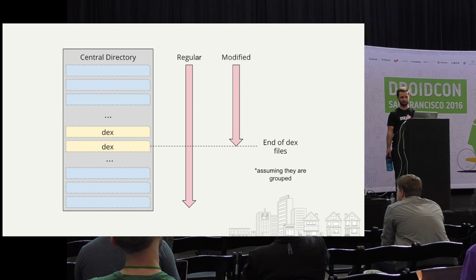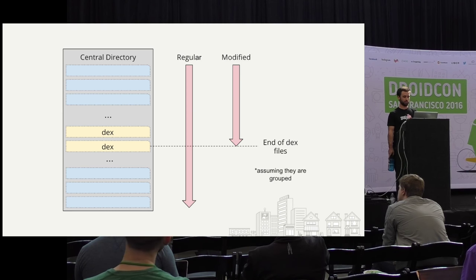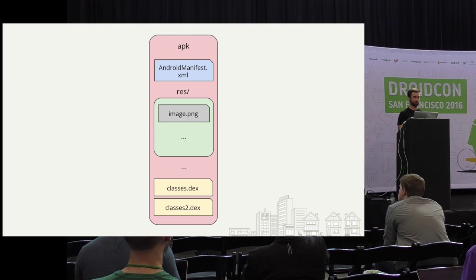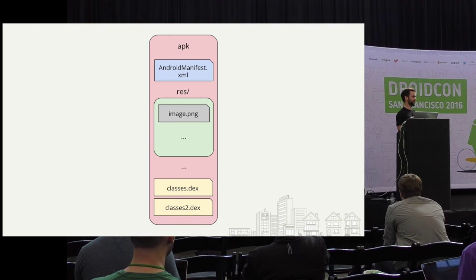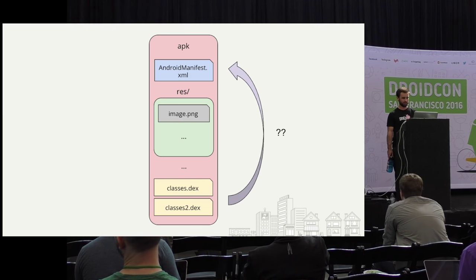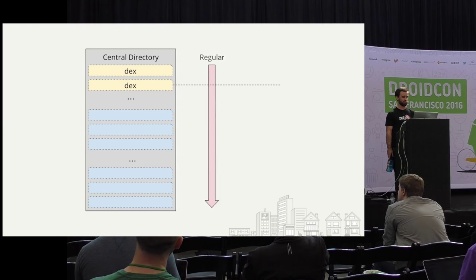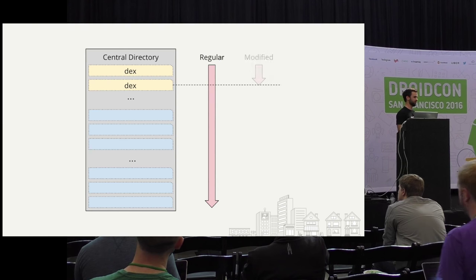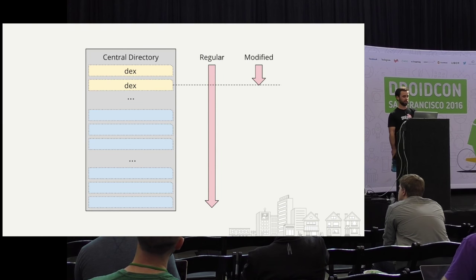So we're reading the central directory, we have dex files in there, we don't know where they are. Let's just assume they're grouped together. At some point there's an end of the dex files — when you read a file that's not a dex file, you know you've read them all. So our regular pass just goes straight down through the entire zip file. What if we modified it to, once we see the end of the dex files, just stop? That'll save us from reading any other parts of the central directory. But where are dex files even in the APK? Looking at the Yelp app, every time I build, the class files end up at the end.